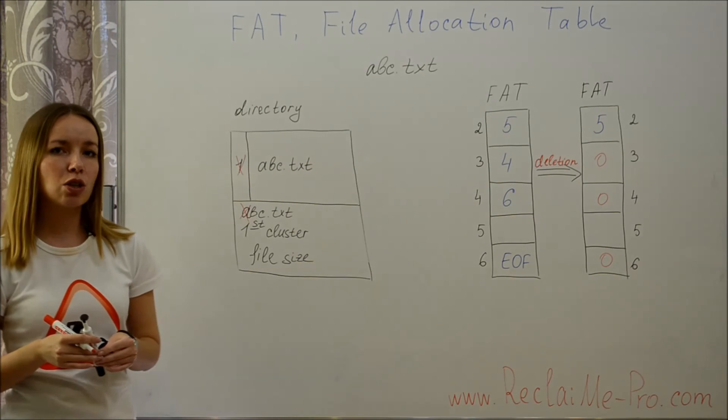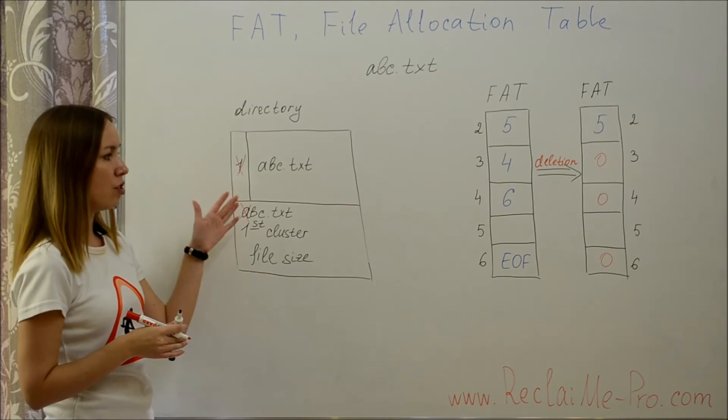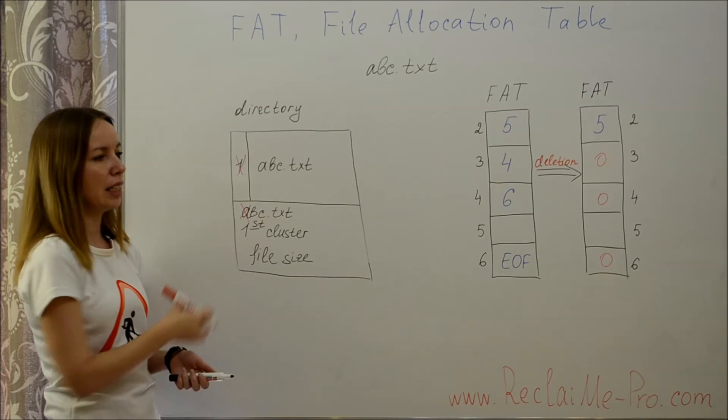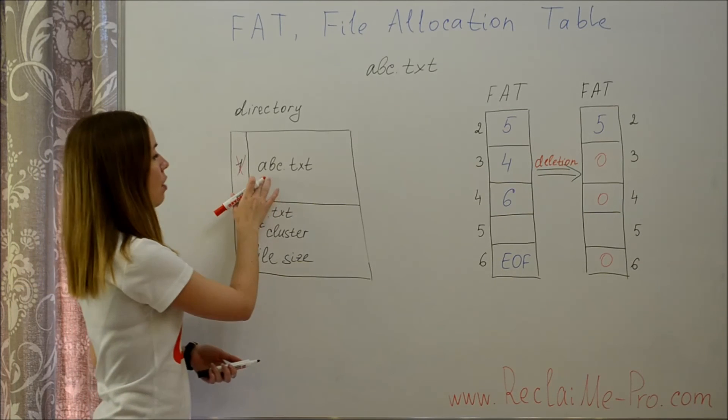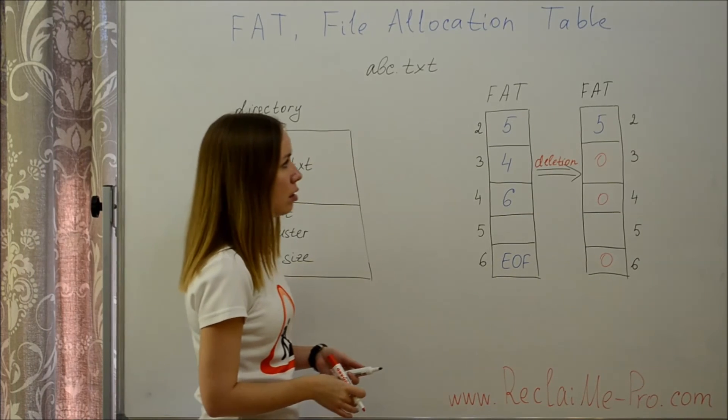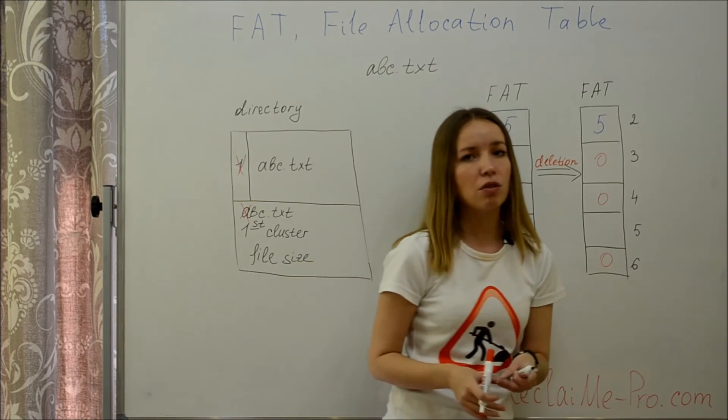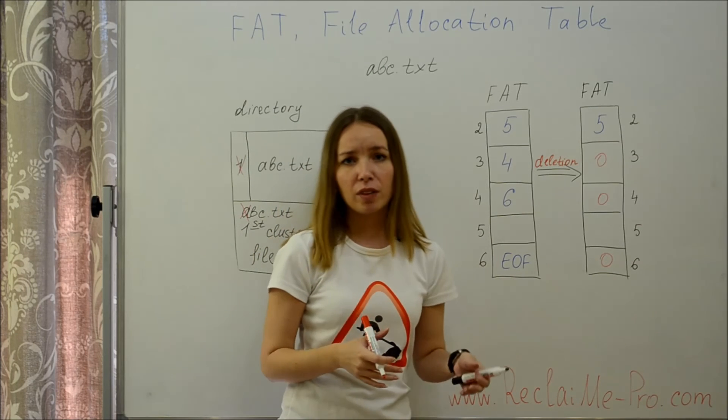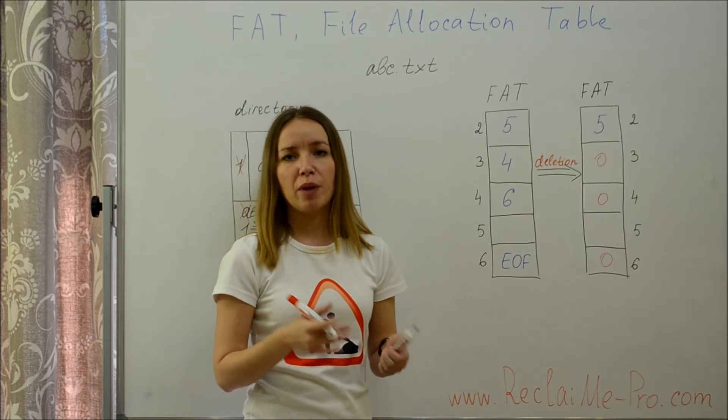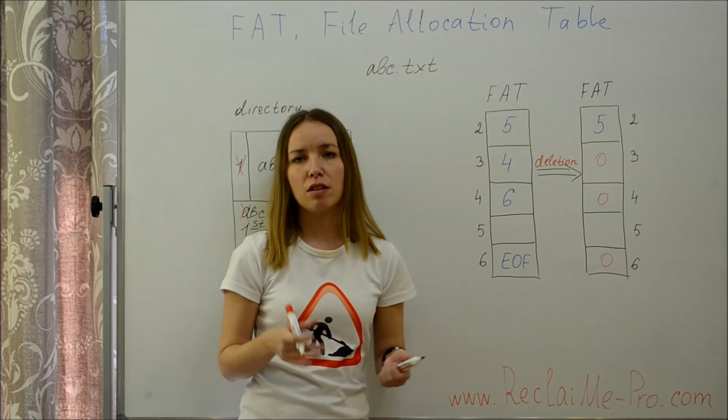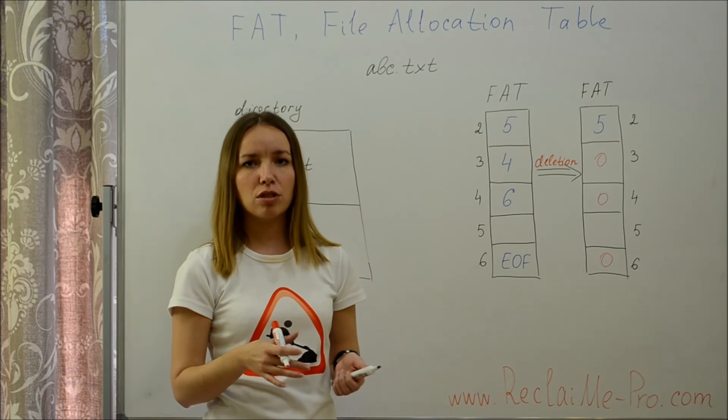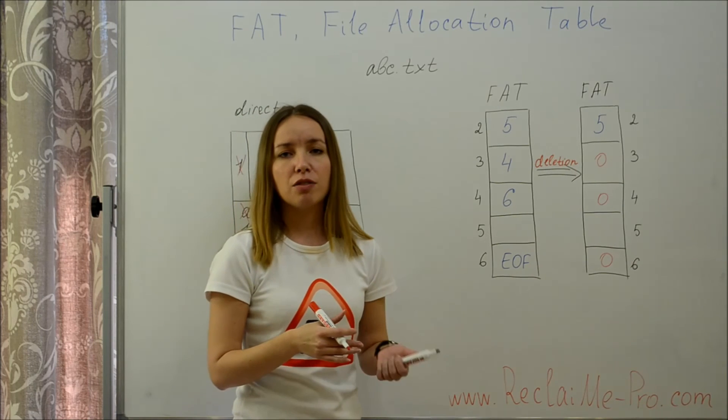As you can see, file deletion does not cause much damage to a directory entry. In the worst case, the first symbol of short file name is lost, but you can easily recover it from the long file name. Much worse is that FAT table is zeroed, and you can no longer find next clusters for a file. And the best assumption you can make in this case is that the file was not fragmented and its clusters are stored contiguously on a disk. If this is not so, the file cannot be recovered.